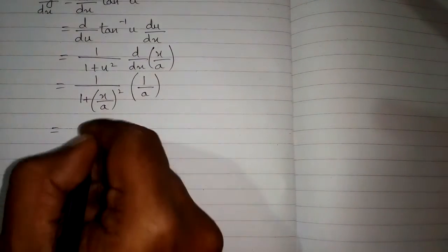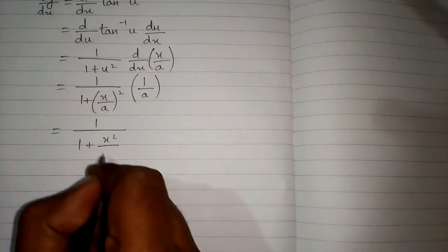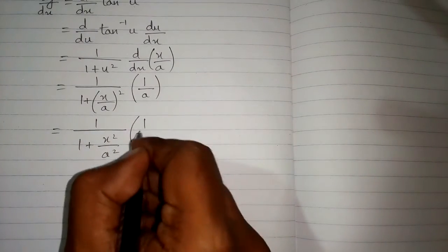Now this can be written as 1 upon 1 plus x square upon a square, multiplied by 1 upon a.